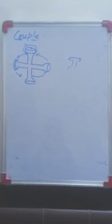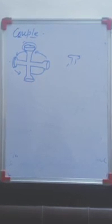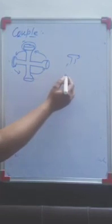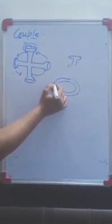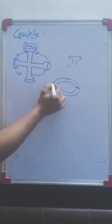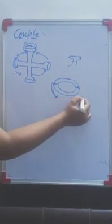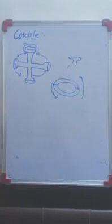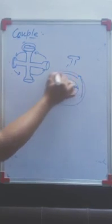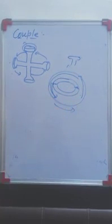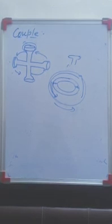When we hold the steering wheel, we hold it at two points. The force at one point is downward and at the other point it is upward. The forces are in different directions but the turning effect is in the same direction. That forms the couple.